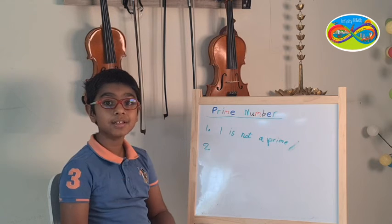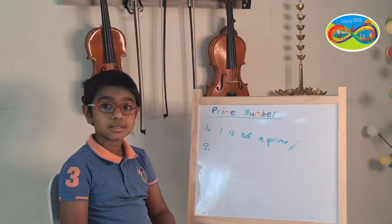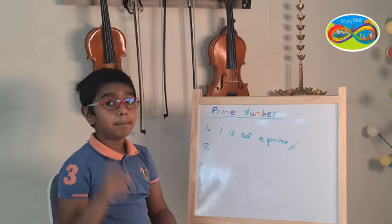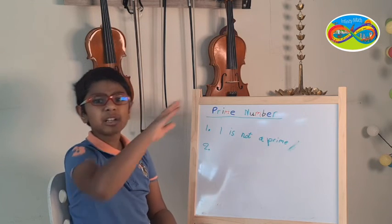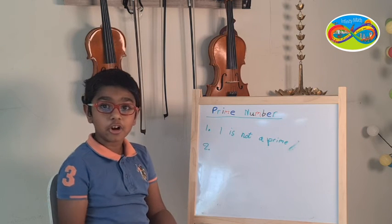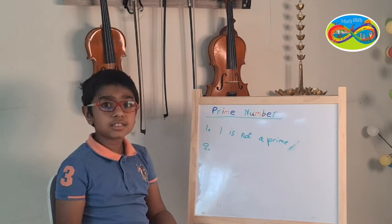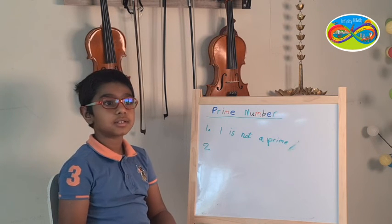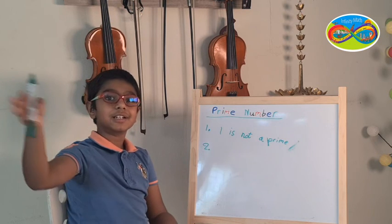And 3, all the prime numbers are odd except 2. But it doesn't mean all odd numbers are prime numbers. Like 9, it's an odd number but it's not a prime number. As like 15. And prime numbers keep on going.